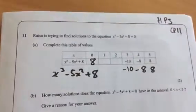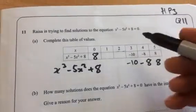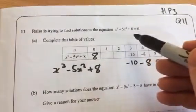Okay, and then when x is 1? It would be 1 cubed minus 5, 1 squared plus 8, so it would come up to 4.